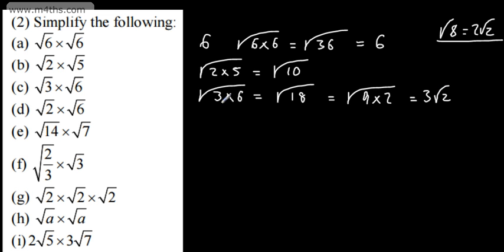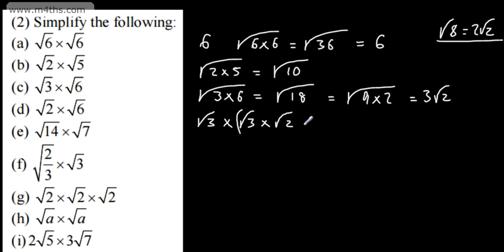Alternatively, what we could have done is written this as root of 3 multiplied by — thinking about the root of 6 — that's the root of 2 multiplied by the root of 3. This is a different approach: splitting root 6 using the root of AB equals root A times root B. Root 3 times root 3 is 3, and then we'd have 3 root 2.